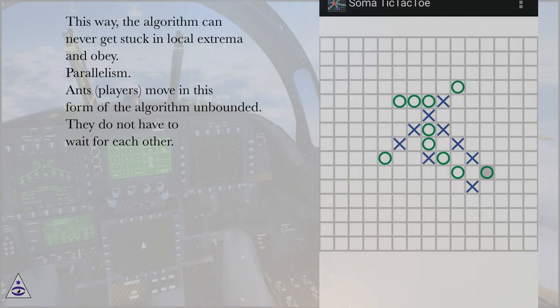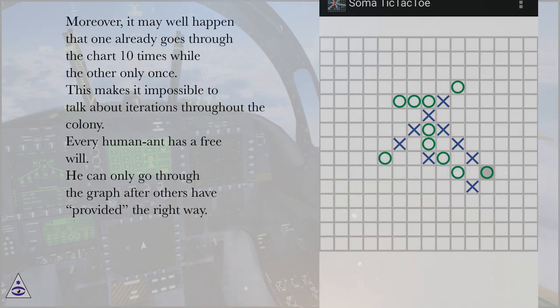Parallelism: Ants, or players, move in this form of the algorithm unbounded. They do not have to wait for each other. Moreover, it may well happen that one already goes through the chart ten times while the other only once. This makes it impossible to talk about iterations throughout the colony. Every human ant has a free will. He can only go through the graph after others have provided the right way.